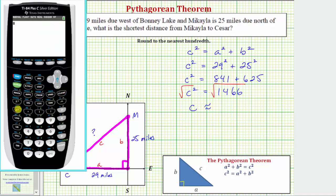So if we press second x squared, it brings up the square root. So we have the square root of 1466, enter. To two decimal places, c is approximately 38.29.